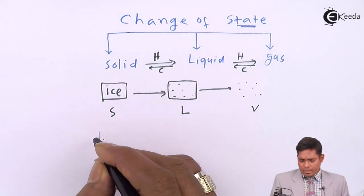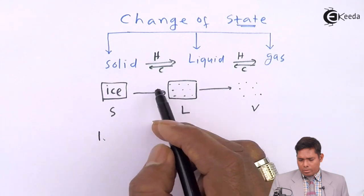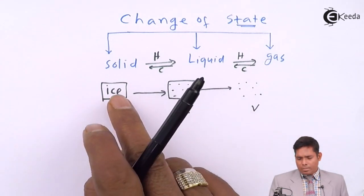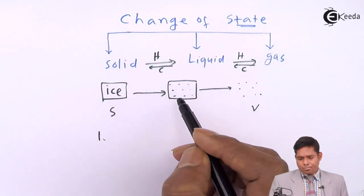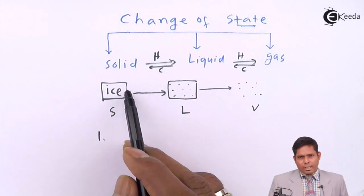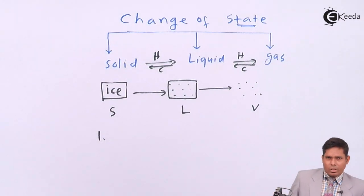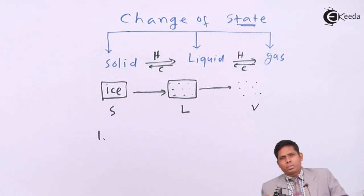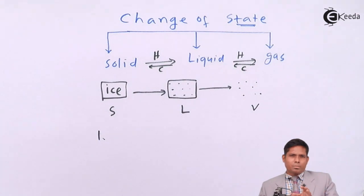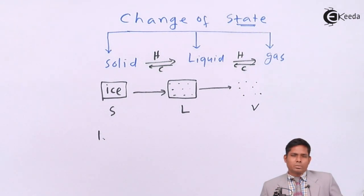An important point to keep in mind: during a change of state, the temperature of the substance does not change. For example, if ice is melting into liquid and you continuously supply heat, while some part is melting and some part is yet to melt, the temperature of the substance remains the same throughout that process.